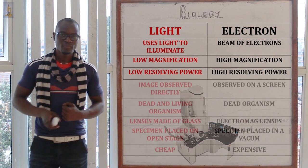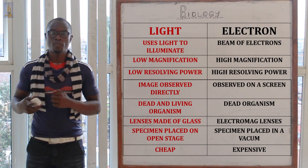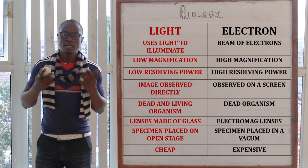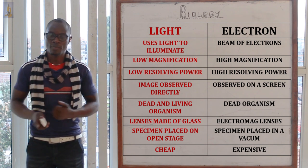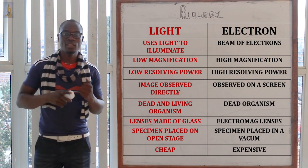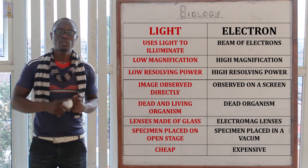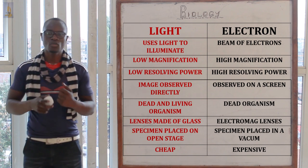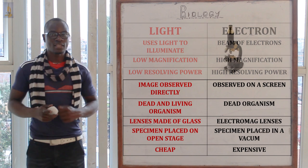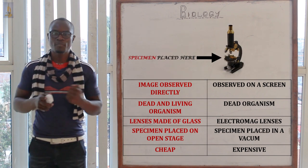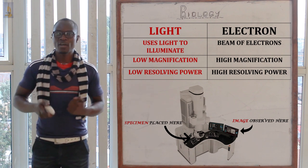The light microscope can use dead or living specimens, while the electron microscope must use only dead specimens — it can never use a live specimen. This is because the specimen in the electron microscope is placed in a vacuum chamber, and it is subjected to a vacuum atmosphere, which is why the specimen must be dead.